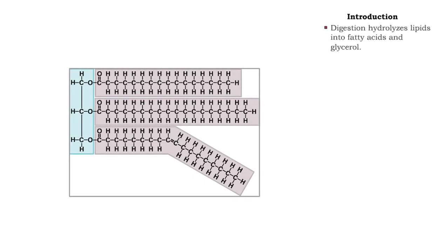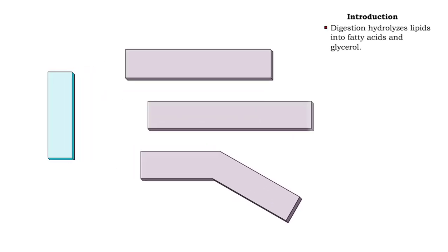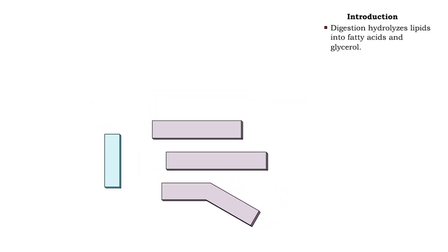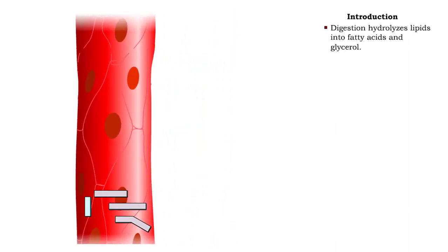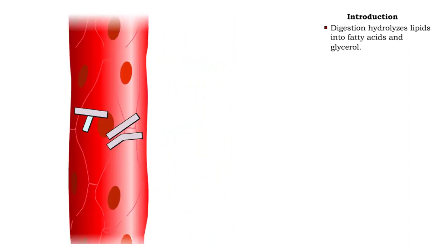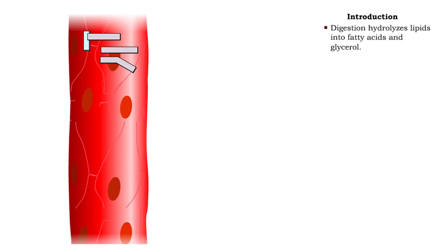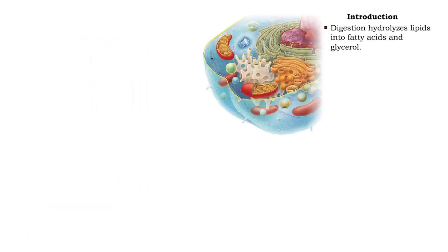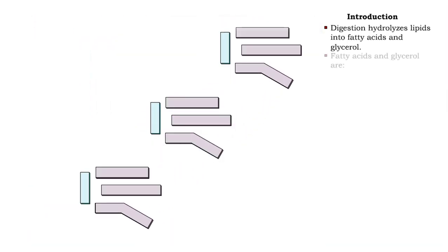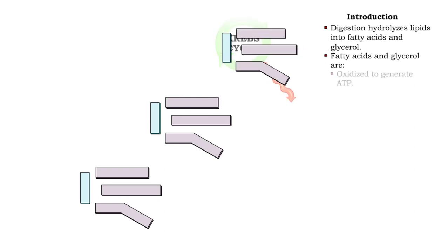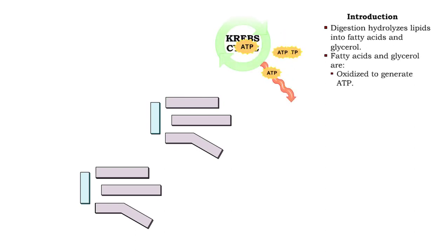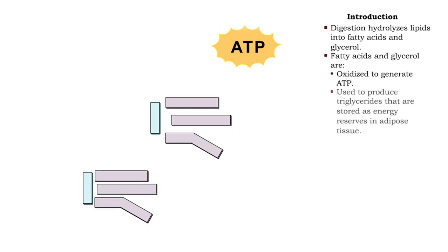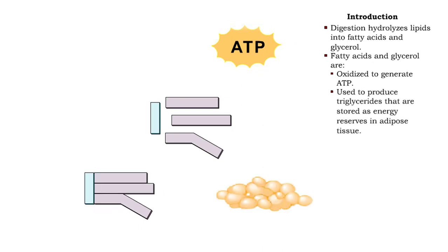During digestion, lipids are hydrolyzed to fatty acids and glycerol. Fatty acids and glycerol can be oxidized to generate ATP, or used to produce triglycerides for energy storage.